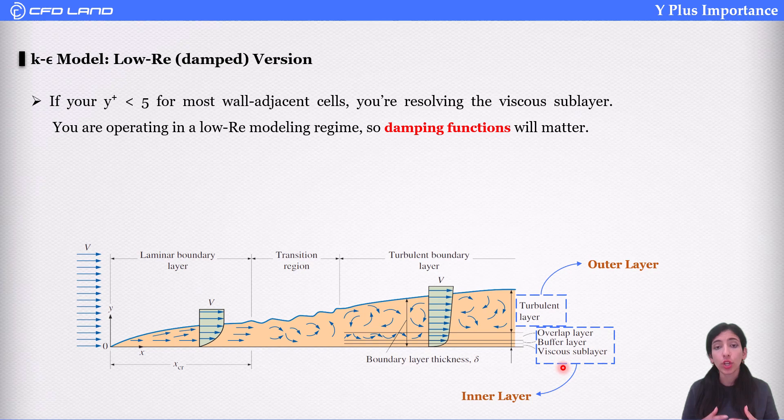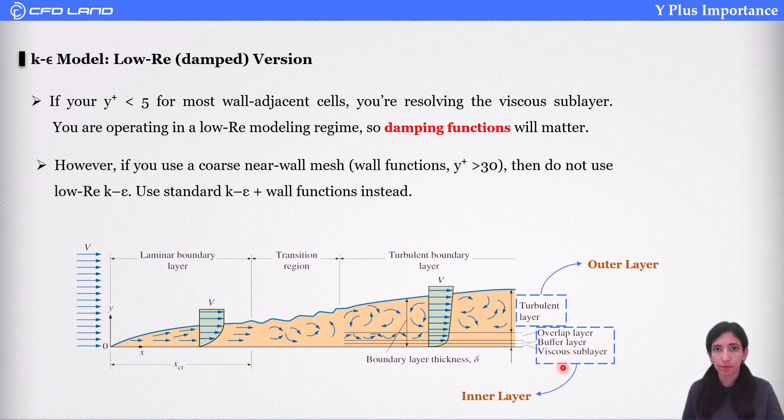So, when you want to use k-epsilon model to model viscous sub-layer, you need to use damping functions, because we get more dissipation of kinetic energy in that layer, where viscous forces are dominant. But, if you are modeling other parts, such as turbulent layer, the outer layer, just use the standard k-epsilon model.